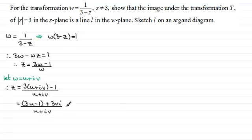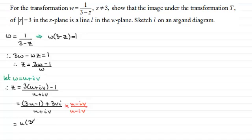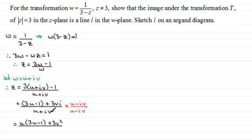To simplify this I need to multiply top and bottom by the complex conjugate of u plus iv, so that's going to be u minus iv over u minus iv. Expanding and collecting the real parts first, we get u multiplied by all of 3u minus 1, plus a real part from multiplying 3vi with minus iv, which gives us positive 3v squared. That's all divided by u plus iv multiplied by u minus iv, which comes to u squared plus v squared.